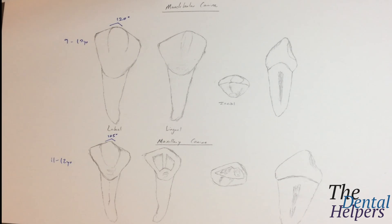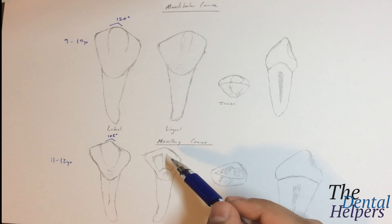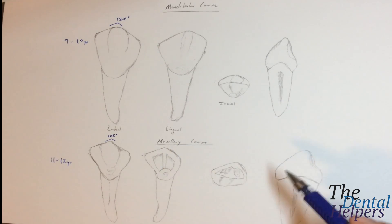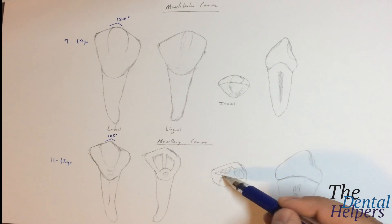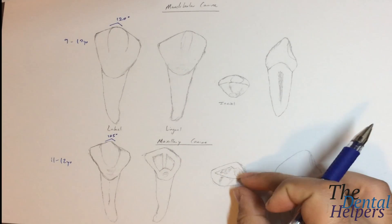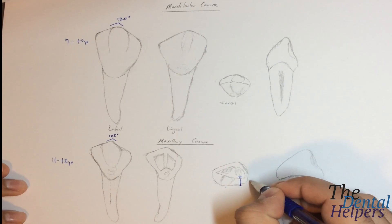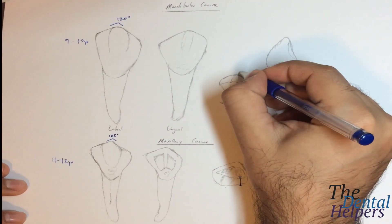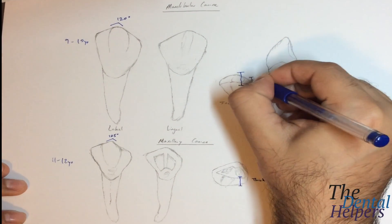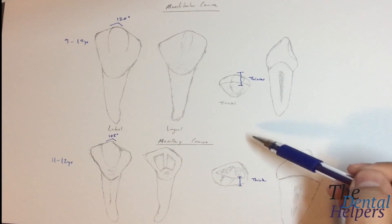Also in the maxillary, there is a slight distolingual twist of the crown. And in terms of the facial-lingual, if we look at the thickness from the facial to the lingual at the cusp tip, we're going to see that the maxillary is going to be thicker facially-lingually, while the mandibular is going to be thinner.